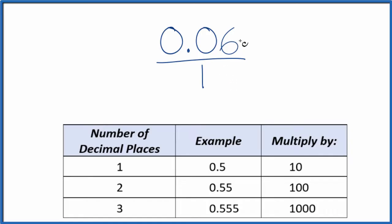What we need to do is get this to be a whole number. To do that, we have two decimal places, so let's multiply by 100. 100 times 0.06,